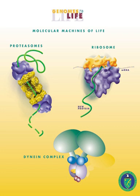Bioengineering overlaps substantially with biotechnology and the biomedical sciences in a way analogous to how various other forms of engineering and technology relate to various other sciences — for example, aerospace engineering and other space technology to kinetics and astrophysics. In general, biological engineers or biomedical engineers attempt to either mimic biological systems to create products, or modify and control biological systems so that they can replace, augment, sustain, or predict chemical and mechanical processes.